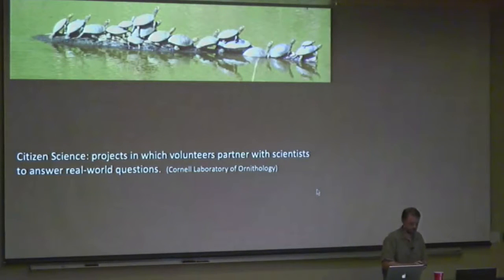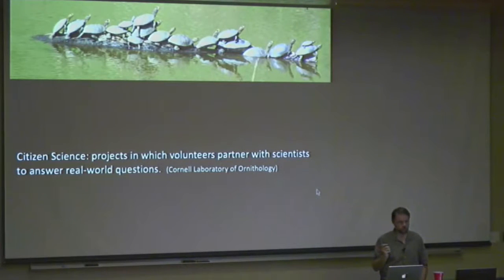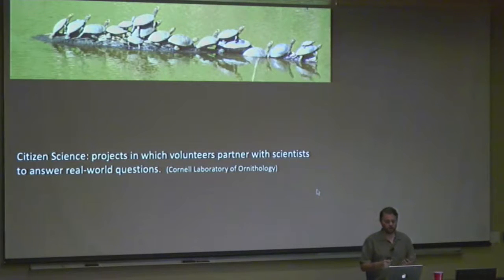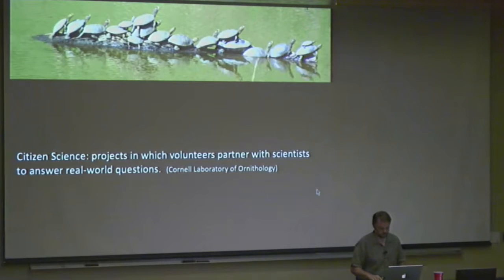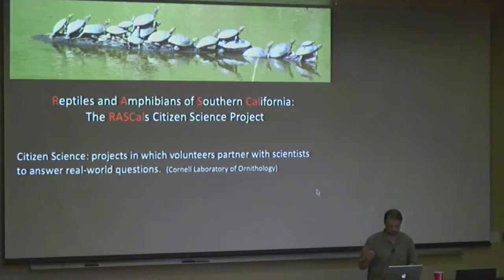So what is citizen science? This definition from the Cornell Laboratory of Ornithology says citizen science projects are those in which volunteers partner with scientists to answer real-world questions — questions that scientists are posing and asking for help with because it's the only way they can get the data. The project I created is called the Reptiles and Amphibians of Southern California Project, with the acronym RASCALS.